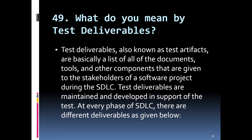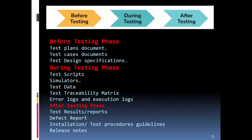What are test deliverables? Test deliverables, also known as test artifacts, are a list of all documents, tools, and other components given to stakeholders during the STLC. Before testing: test plan document, test cases document, and test design specification. During testing: test scripts, simulators, test data, traceability metrics, error logs, and execution logs. After testing: test results or reports, defect reports, installation or test procedure guidelines, and release notes.